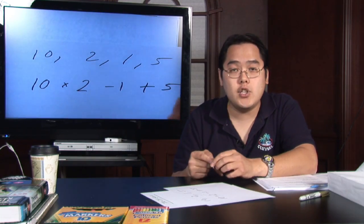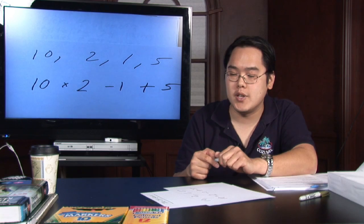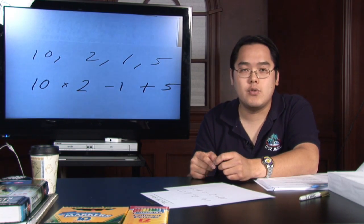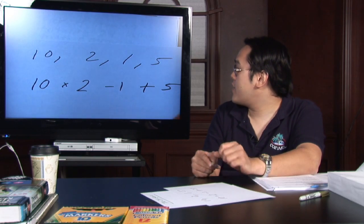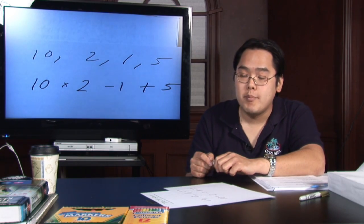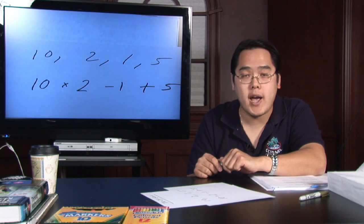Now I've given you an example, there are many examples on how to do this, but the four numbers I've given you are 10, 2, 1, and 5. As you can tell they're not in any particular order per se, but the operations I've chosen are multiplication, subtraction, and addition.